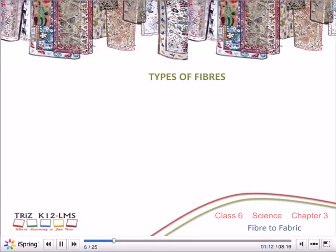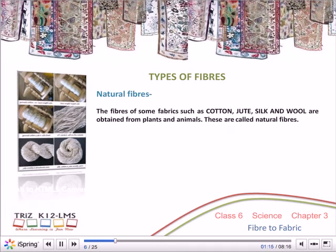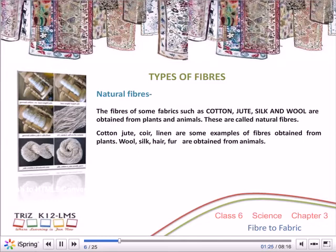Types of Fibres — Natural Fibres: The fibres of some fabrics such as cotton, jute, silk and wool are obtained from plants and animals. These are called natural fibres. Cotton, jute, coir and linen are examples of fibres obtained from plants. Wool, silk, hair and fur are obtained from animals.